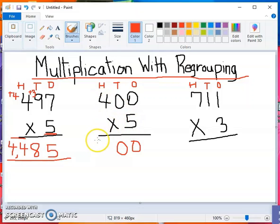Five times four is 20. I will go ahead and write my 20 here because there's no way to carry it over. There's no other number. So I could just write it down. So my answer is 2,000.